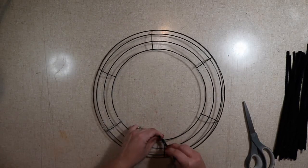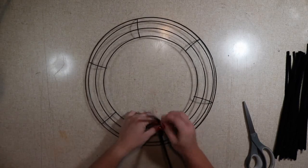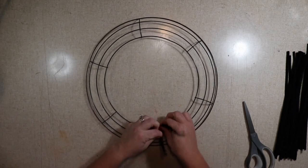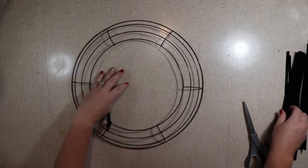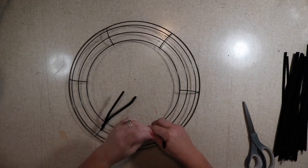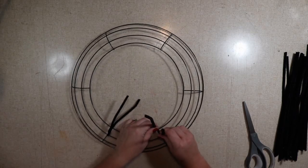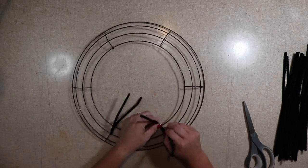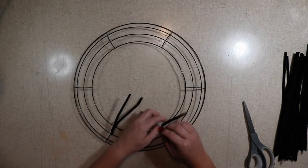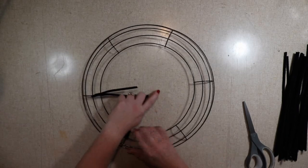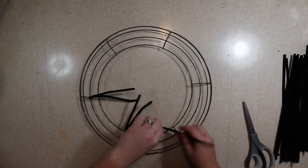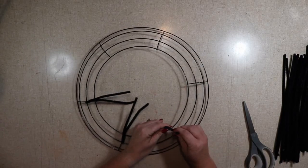I'm going to start by adding a pipe cleaner to the crossbar on the center. I'm going over two bars. I'm going to twist it three times. I'm going to do it pretty tight. You don't want to do it so tight that you bend the wreath form but you don't want the pipe cleaners to move at all.